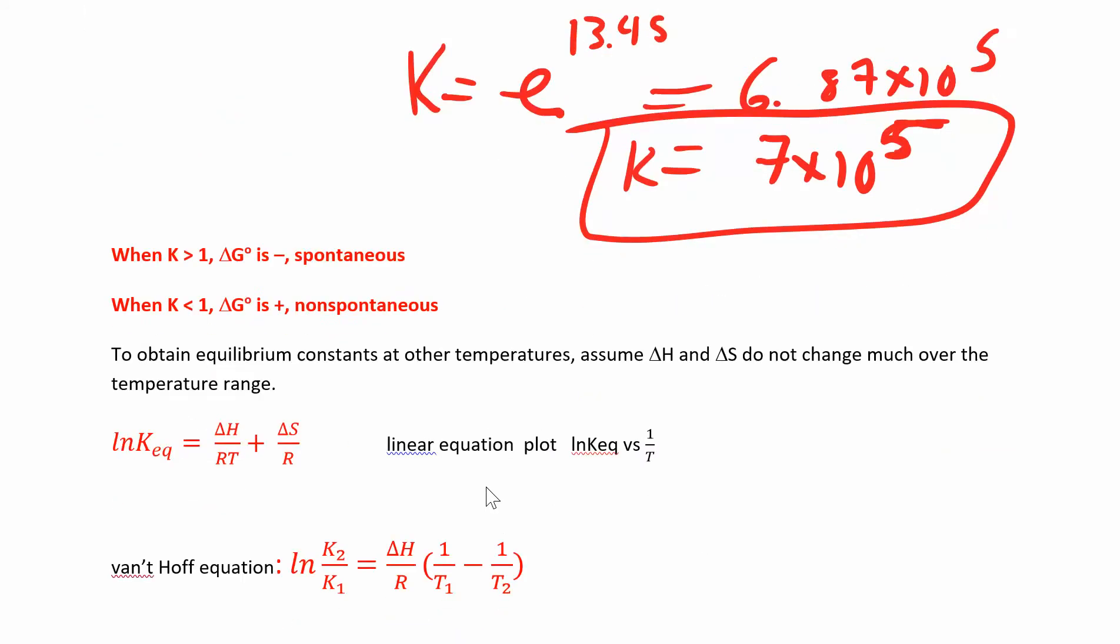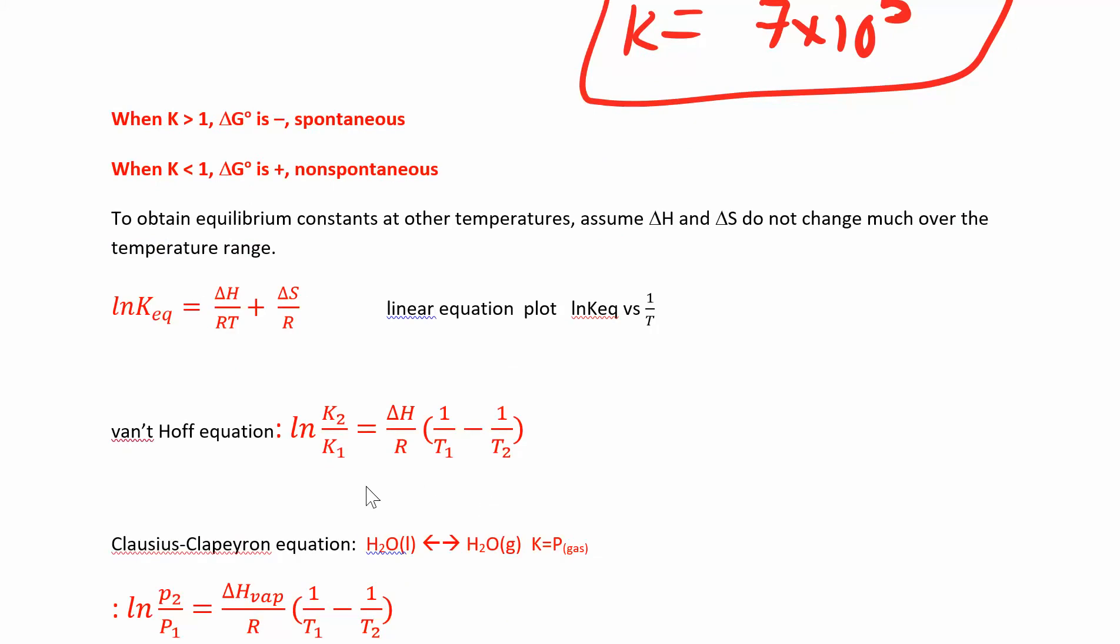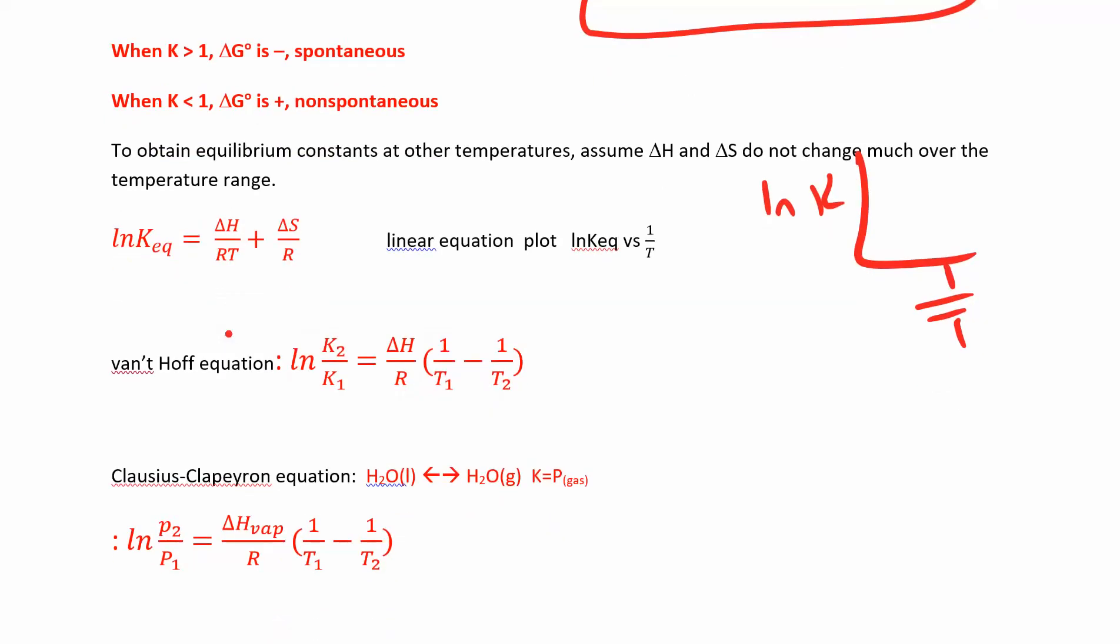There are a few other equations we can look at that are related to this chapter. If you wanted to look at how the equilibrium constant changes at different temperatures, assume that delta H and delta S are not going to change very much. This is a linear equation, so you can plot the natural log of K versus one over temperature, and you'll get a straight line. And your slope will be equal to delta H over R.